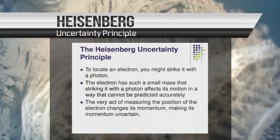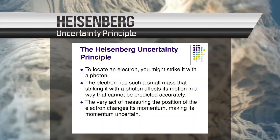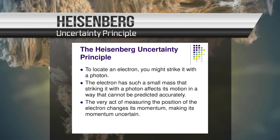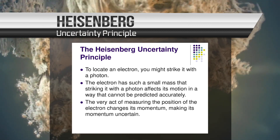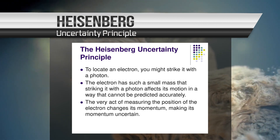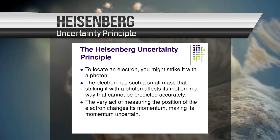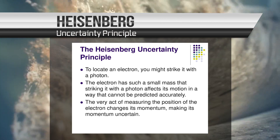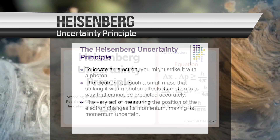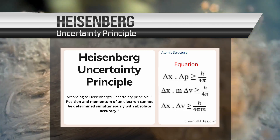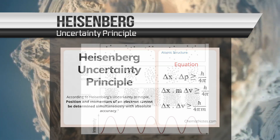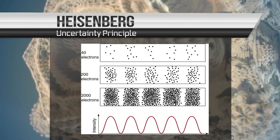Heisenberg's Uncertainty Principle is another important concept of quantum physics. It states that there is a fundamental uncertainty in the precision of the position and momentum of quantum objects, meaning it is not possible to know both of these quantities with perfect accuracy at the same time. This uncertainty arises because the act of measuring a quantum object can disrupt it in a way that makes it difficult to determine its precise state.